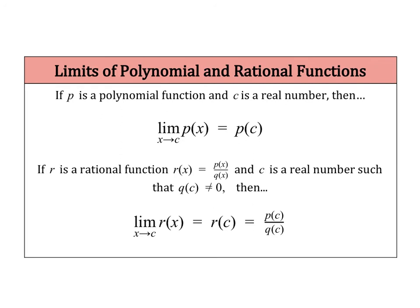Here is just a generalization to save you some time. Essentially, if p is a polynomial and c is a real number, we can always know that direct substitution will work: the limit of p of x as x approaches c is just p of c. And for any rational function r of x, you can use direct substitution as long as your denominator does not equal 0 — that is, as long as substituting your c value doesn't give you an undefined value.